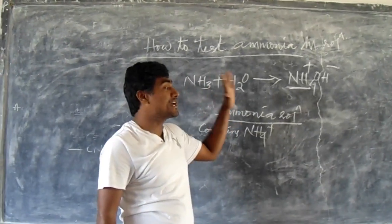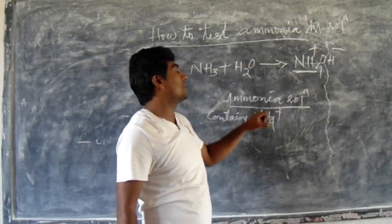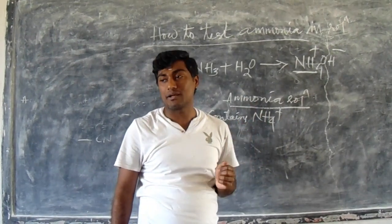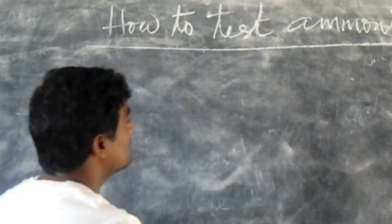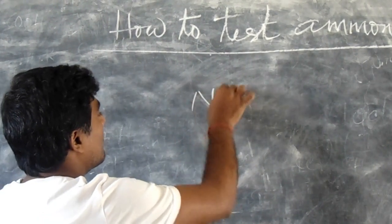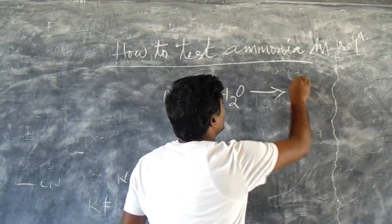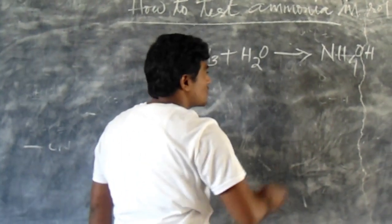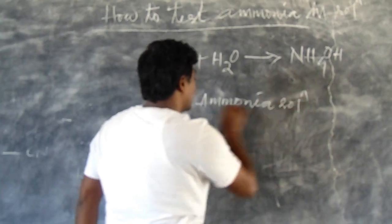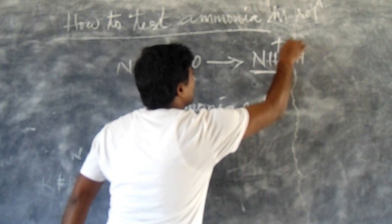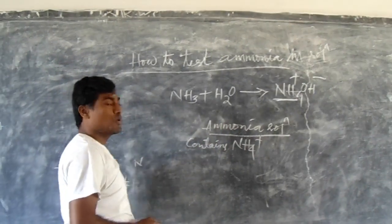Our aim is to detect the presence of ammonia in the solution. When we add ammonia to water, NH3 plus H2O gives you NH4OH — what you call ammonia solution. Ammonia solution contains NH4 plus ions, ammonium ions.